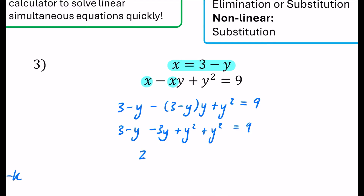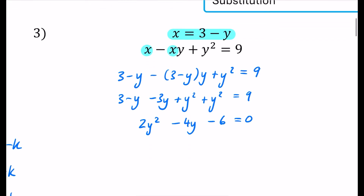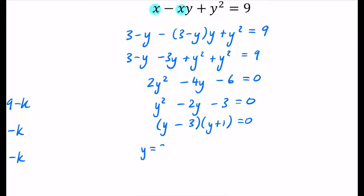Starting with the y squared terms — there are two of those. Then looking at the y terms: minus y minus 3y gives minus 4y. Since it's a quadratic I want it equal to zero, so subtracting 9: I get 2y squared minus 4y minus 6 equals 0. Dividing everything by 2 gives y squared minus 2y minus 3 equals 0. This factorises as (y minus 3)(y plus 1), giving two solutions: y equals 3 or y equals minus 1.